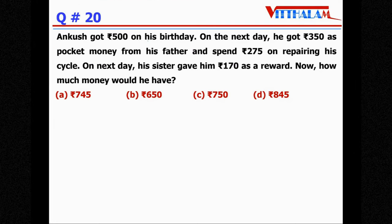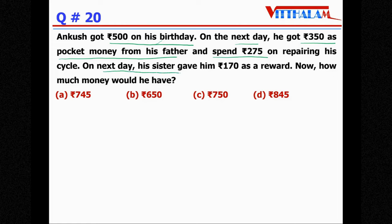Next, Ankush got rupees 500 on his birthday. On the next day he got rupees 350 as pocket money from his father and spent rupees 275 on repairing his cycle. Next day his sister gave him 170 as a reward.